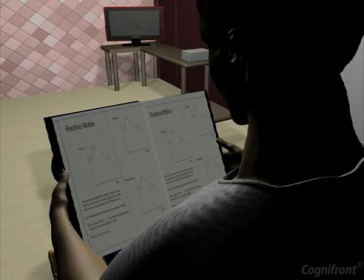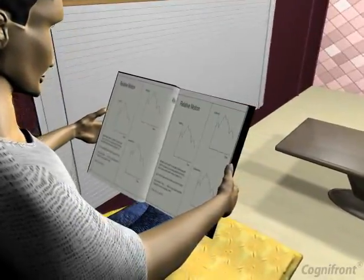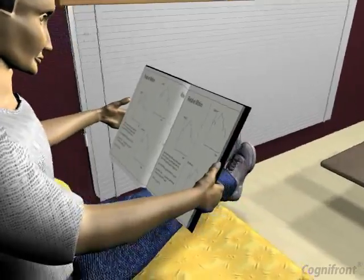Here, observe that the chairs, table and the television are not moving. Therefore, they seem to be stationary for the observer.